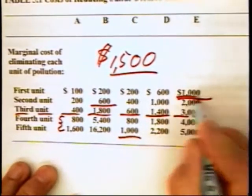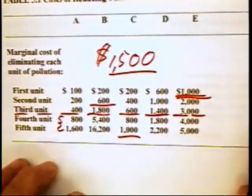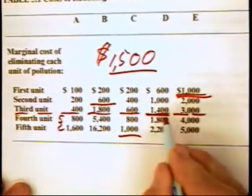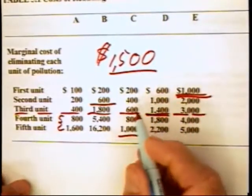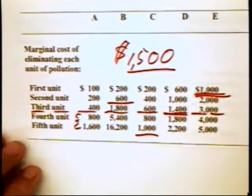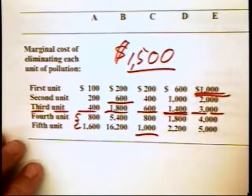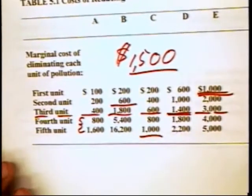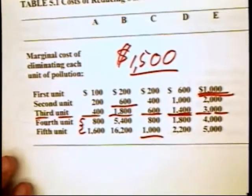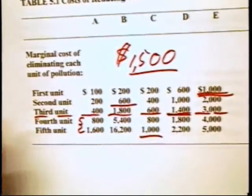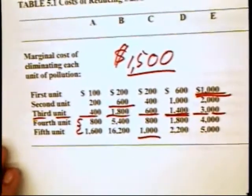Notice that the pollution rights end up exactly where they were if in fact the government had auctioned off these certificates. But of course, the firms would prefer to have these rights to pollute and then be able to sell them, rather than not being able to sell them.